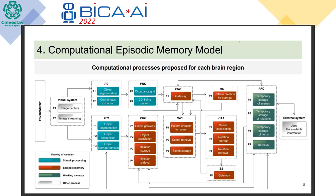Now that we know the number of objects and their location, we use structures like the inferotemporal cortex (ITC) or the prefrontal cortex. This structure helps us determine the class or category of an object — for example, knowing that something is a bunny. After we send the main features, it will identify the object and reply with the class it belongs to.